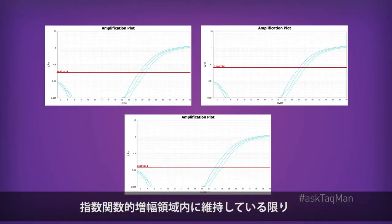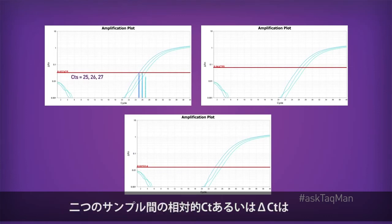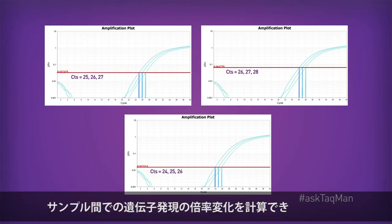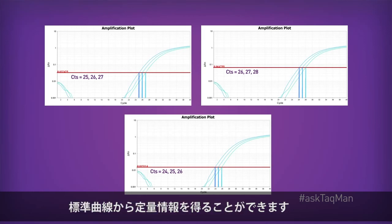But here's the thing. As long as we keep the threshold firmly within the geometric phase, the relative or delta CT between any two samples stays constant. This fact allows us to do things like calculate fold changes in gene expression from sample to sample and to get quantity information from a standard curve.